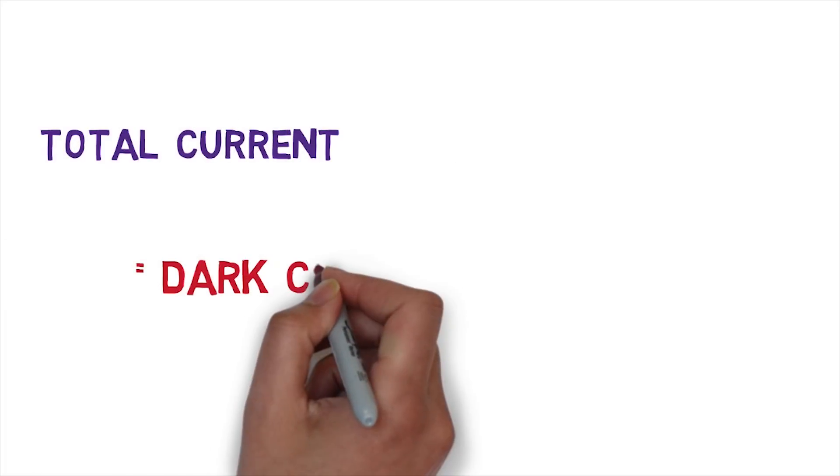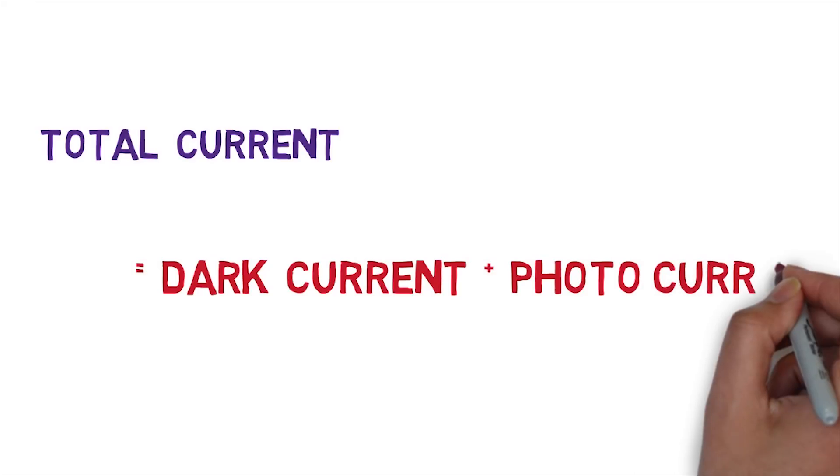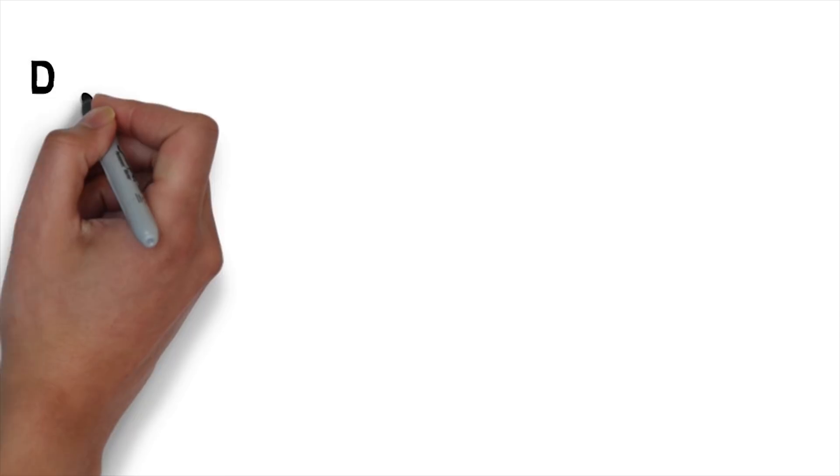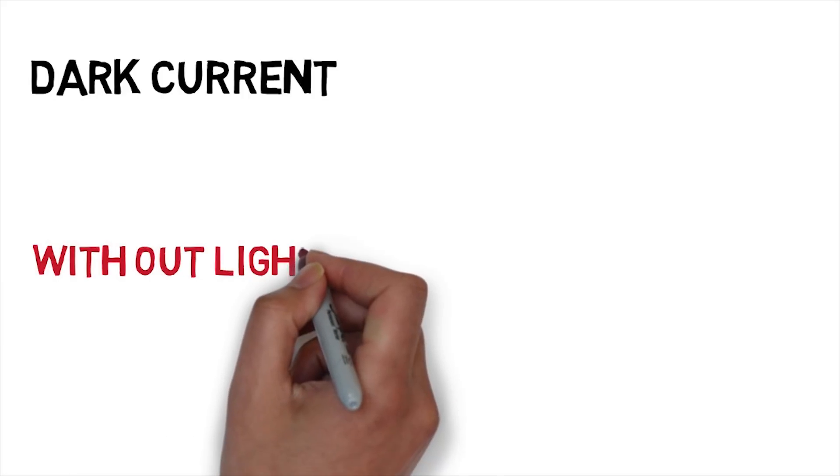This photodiode's total current is dark current plus photocurrent. Dark current is generated even when light is not present. This is a very reduced condition - it is very low, and the sensitivity is very low.